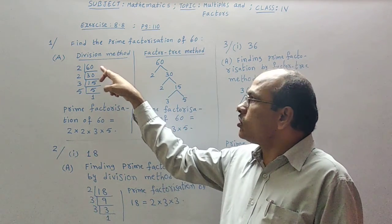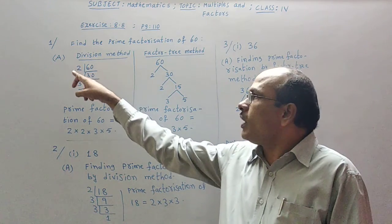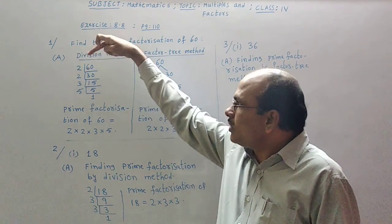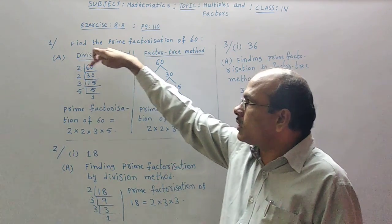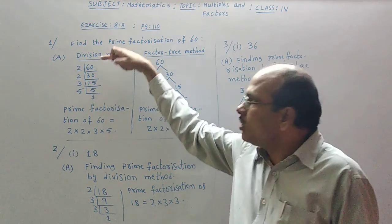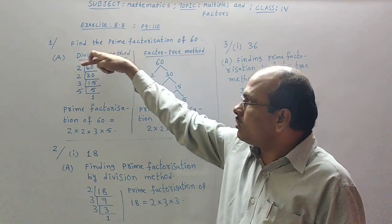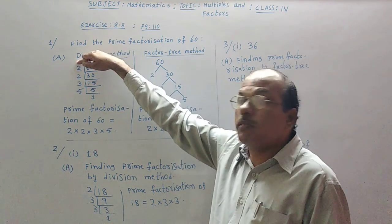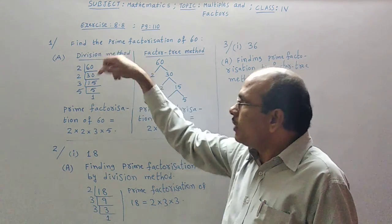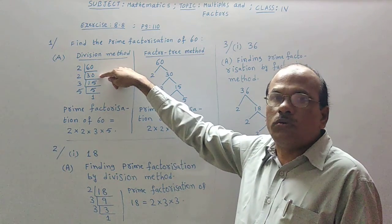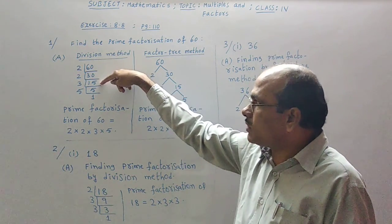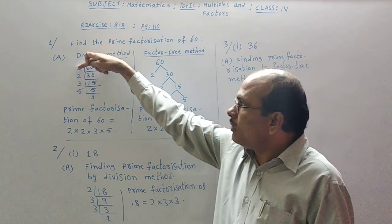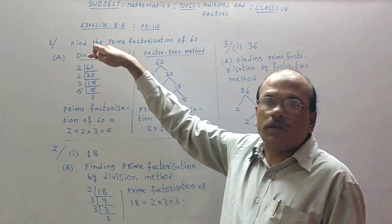See here, 60 is taken. We have to select only prime numbers to divide 60. 2 is a prime number and 2 times 30 is 60 possible. 2 times 30 is 60. 2 times 3 is 6 and 0. That's why 2 times 30 is 60, and 2 is a prime number. Next to this, 30 is possible again with 2 table. 2 times 15 is 30. 2 into 15 gives you 30, and this 2 is also a prime number.